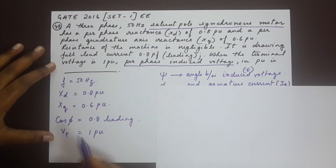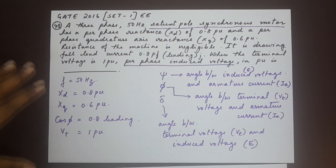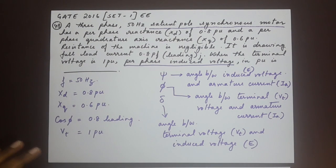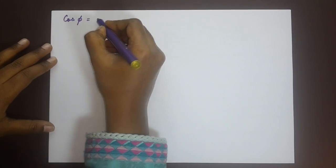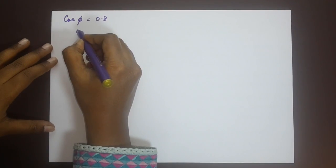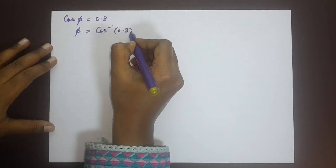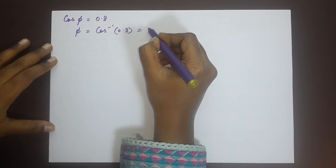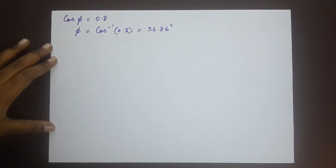Before we go into that, now cos phi is equal to 0.8 leading. So that would give us what the angle of phi is. Let me write it here. We have cos phi is equal to 0.8 which means that phi is equal to cos inverse of 0.8 and that comes around to 36.86 degrees.